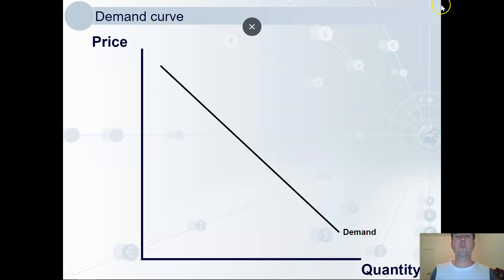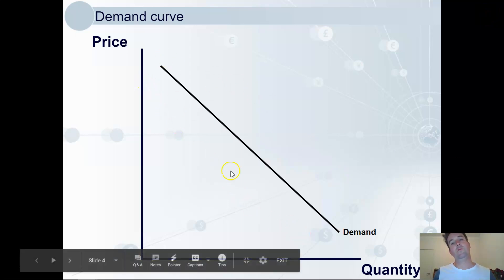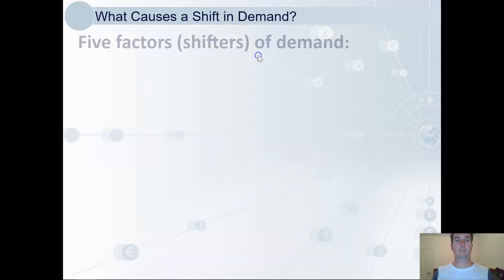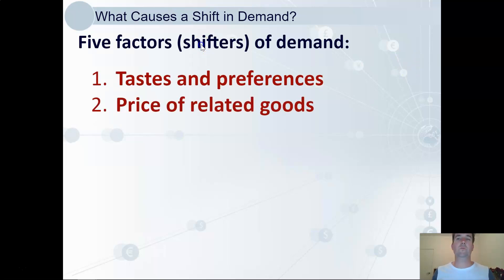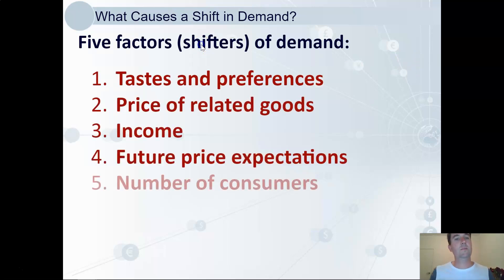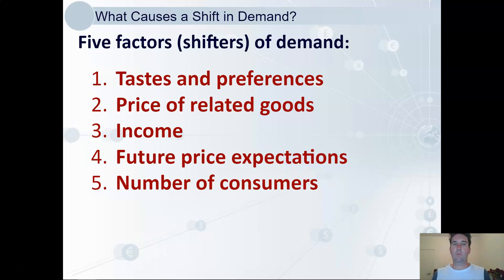But demand also changes due to other factors. An increase in demand will shift this curve to the right, and a decrease will shift it to the left. We're going to look at five factors: tastes and preferences, price of related goods, income, future price expectations, and number of consumers.